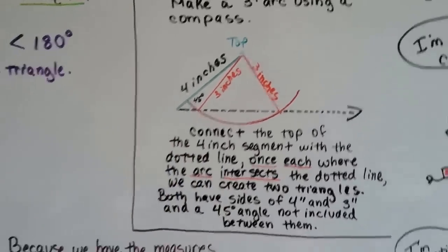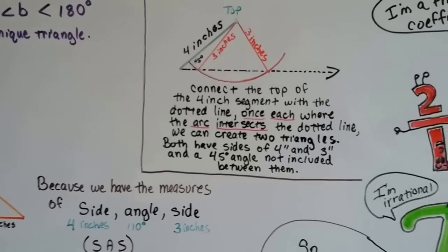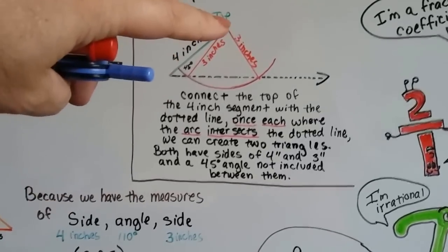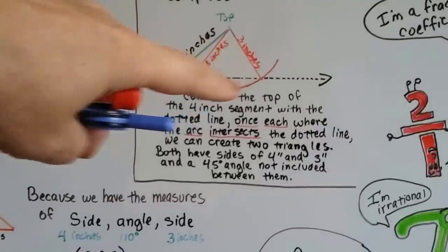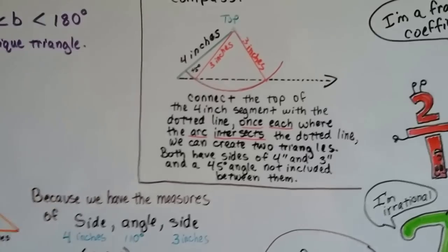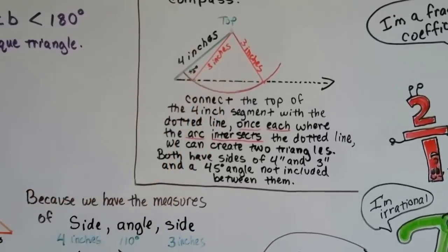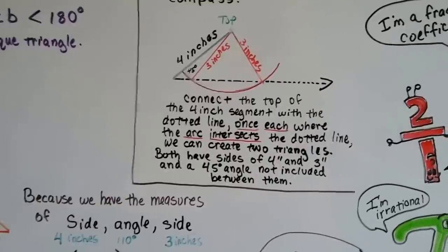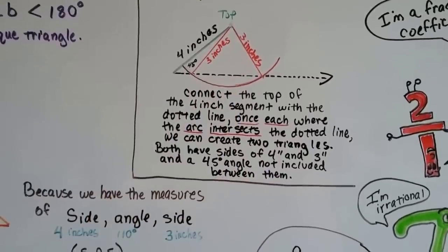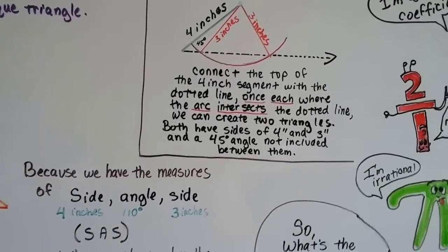So we ended up making two triangles. You can use a compass to do it — connect the top of the four-inch segment with the dotted line, and the two places where it hits make two triangles with identical measurements: four-inch, three-inch sides and a 45-degree angle. But they're different from each other.